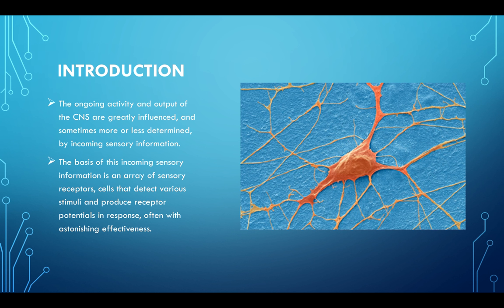The ongoing activity and output of the CNS is greatly influenced and sometimes more or less determined by incoming sensory information. We're sensory beings — we need proper sensory stimulation in order to properly grow, develop, and maintain. The basis of the incoming sensory information is an array of sensory receptors, cells that can detect various stimuli and produce receptor potentials in response, often with astonishing effectiveness.